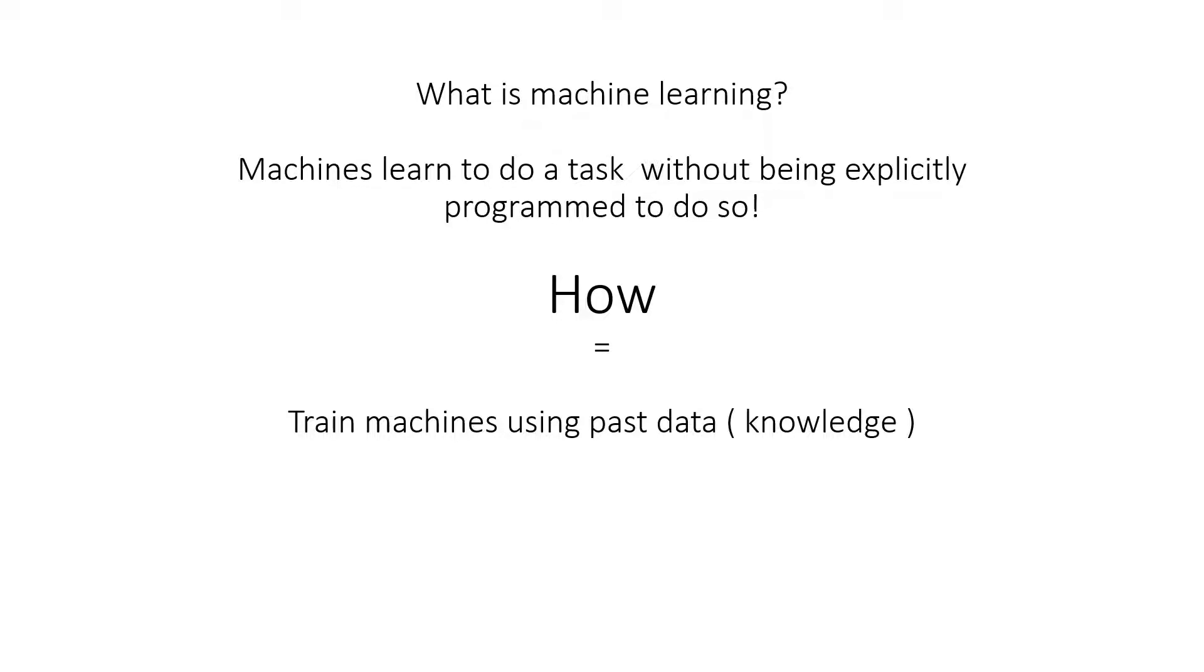Machine learning is a field where machines learn to do a task without being explicitly programmed to do so. How do we do this? We train machines using past data or past knowledge.